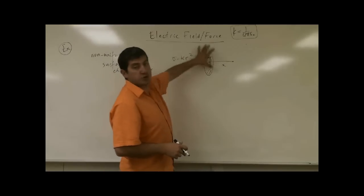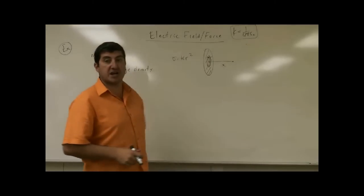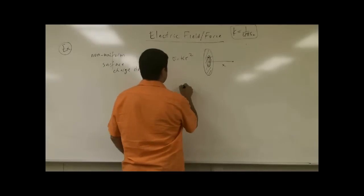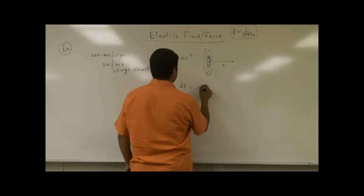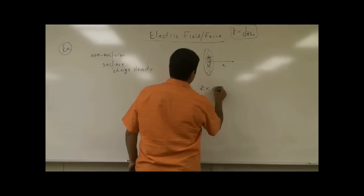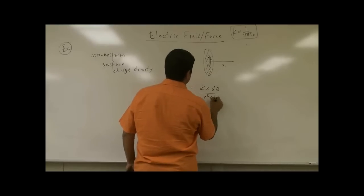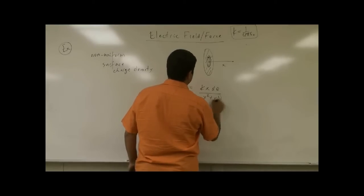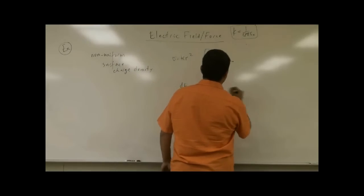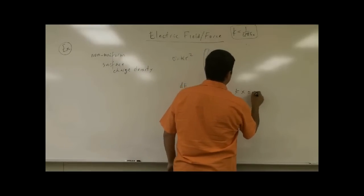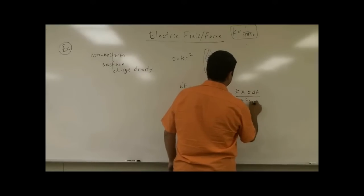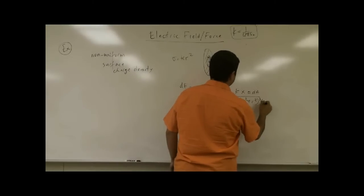So more charge is concentrated on the outside of the disk. I could start the same way as last time: dE is equal to kx dQ over (x squared plus r squared) to the three halves power, and then dQ is sigma dA over (x squared plus r squared) to the three halves power.